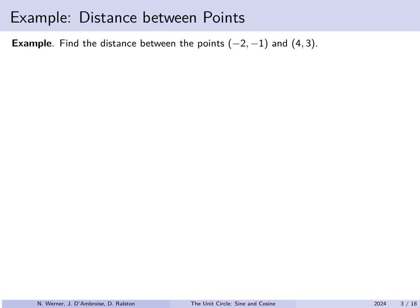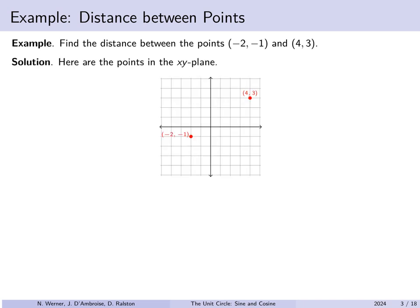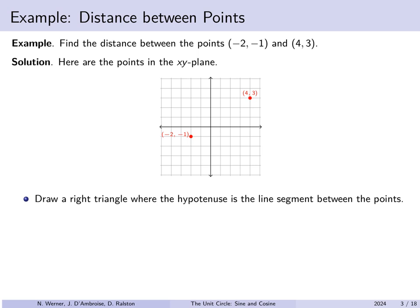So let's start by understanding how to compute the distance between points. Let's take a look at the points negative two, negative one and four, three. How would we find the distance between them? We can plot them in the xy plane. We're going to use these two points to make a triangle. Specifically the hypotenuse of this triangle is going to be the line segment between the two points. We're going to draw a right triangle below this hypotenuse.